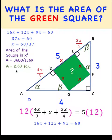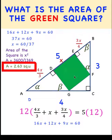Dividing this, we got a value of 2.63 square units. And so the area now of the green square is 2.63 square units. And that is now our final answer.